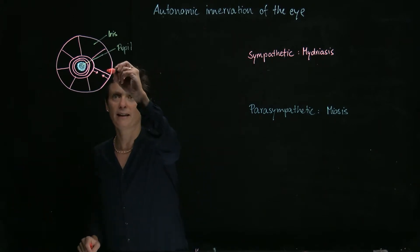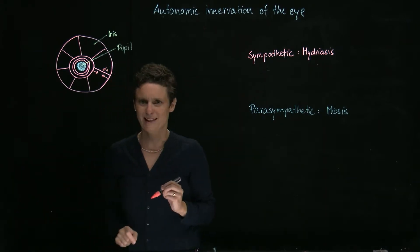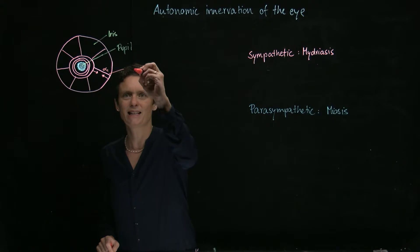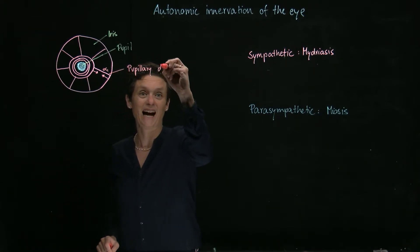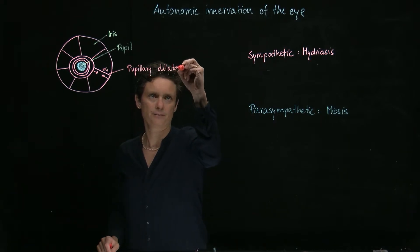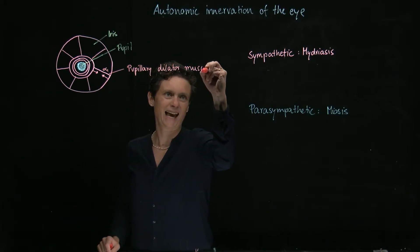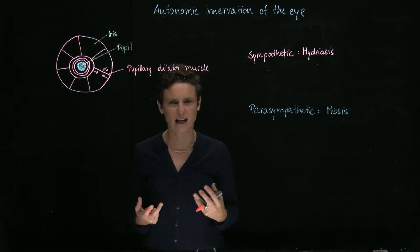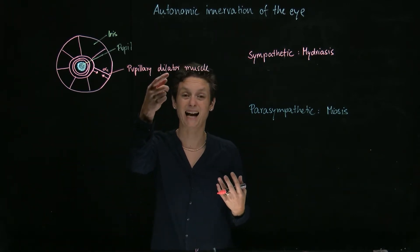And in fact, we find alpha-1 receptors sitting here. This is the pupillary dilator muscle. It has a nice name because it already tells you what the effect is going to be—it dilates the pupil.